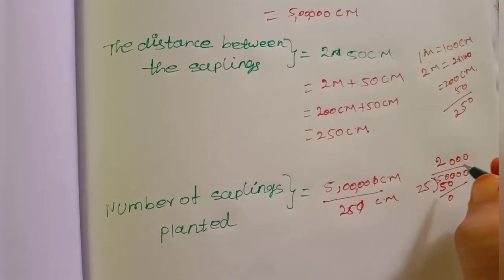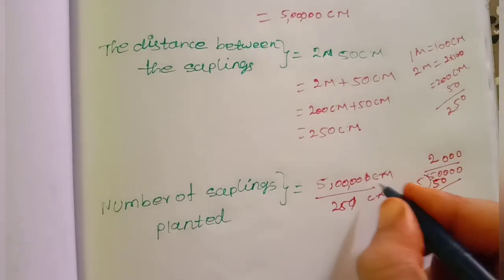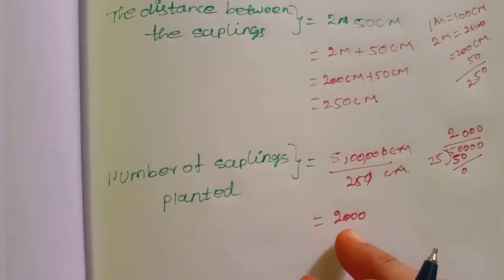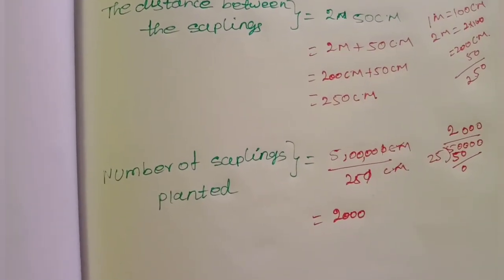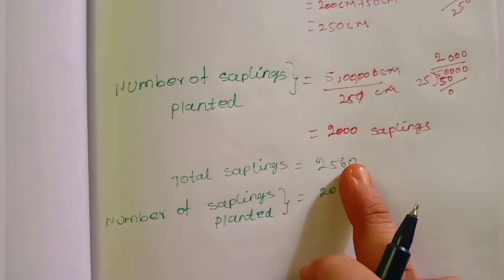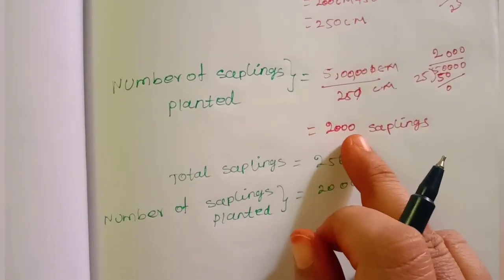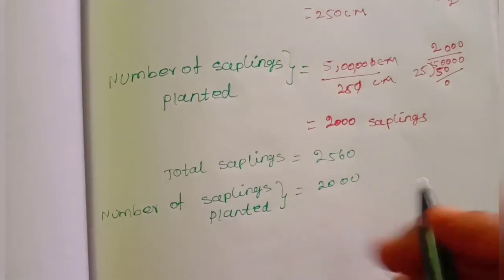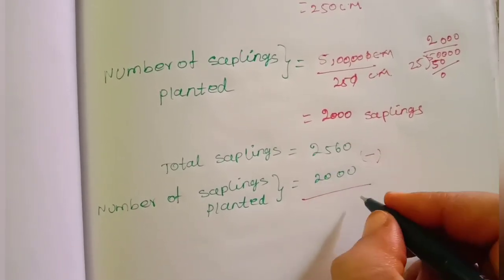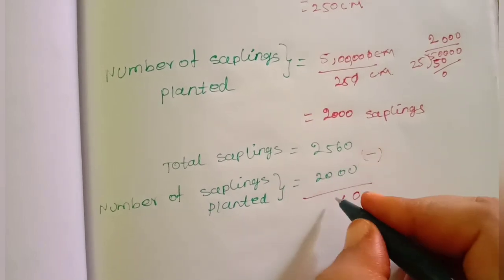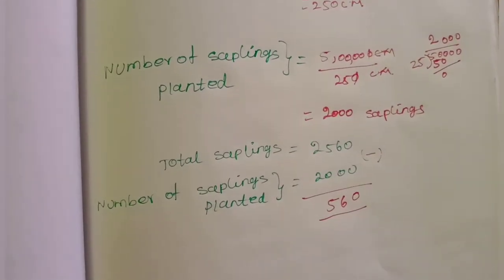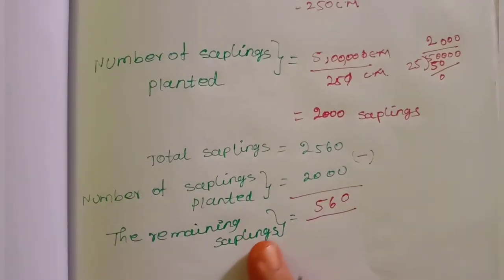So there are 2000 saplings planted. The total saplings available are 1560. Since 2000 saplings can be planted but only 1560 are available, 560 saplings are remaining.